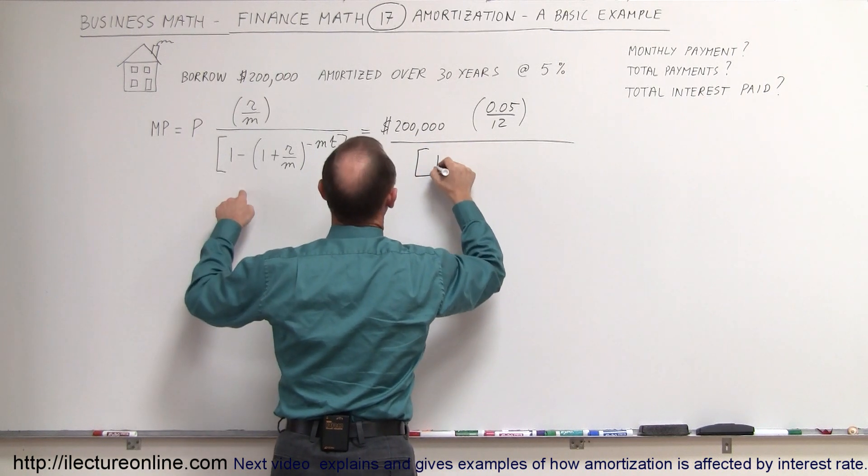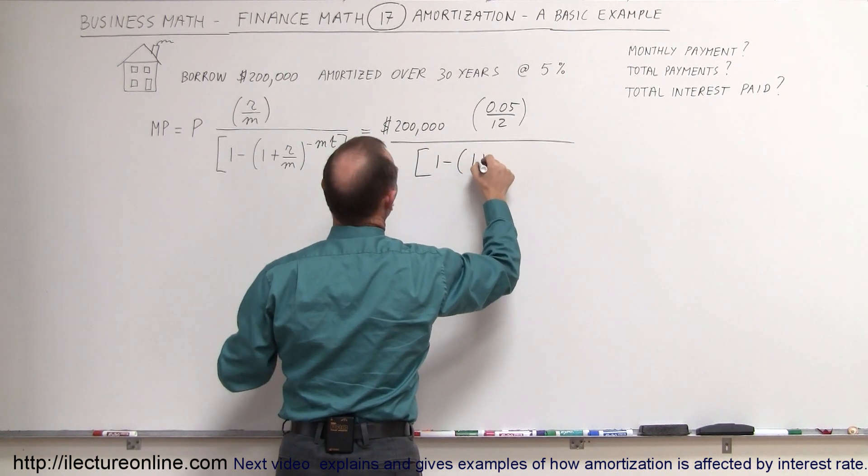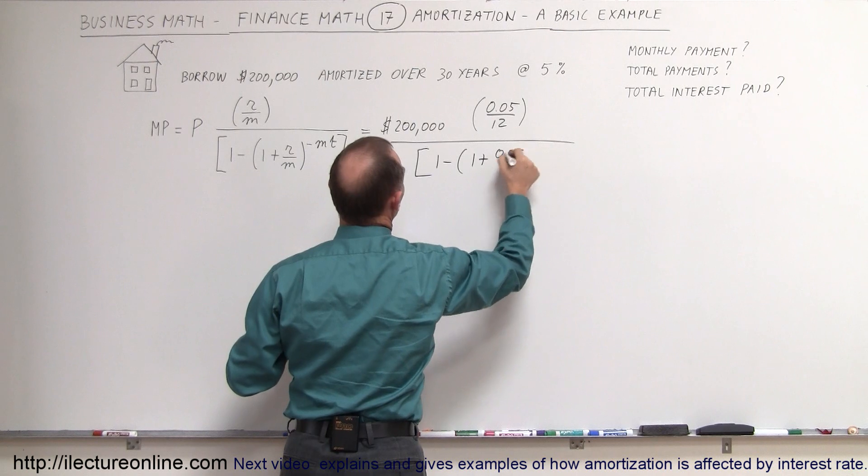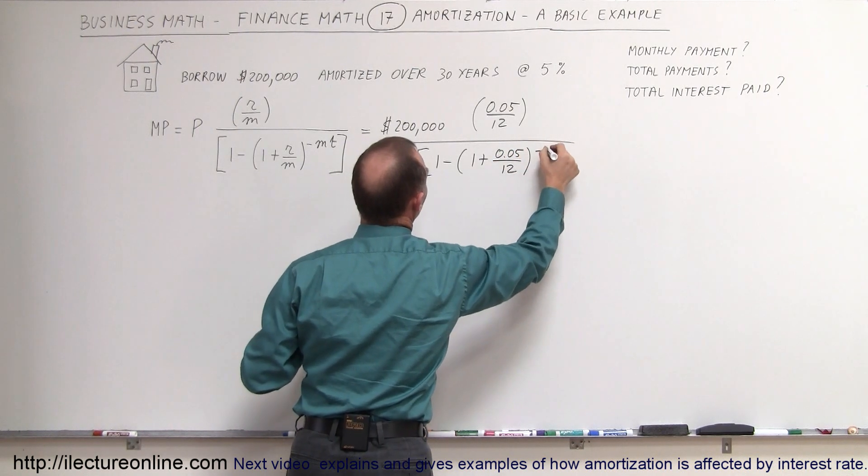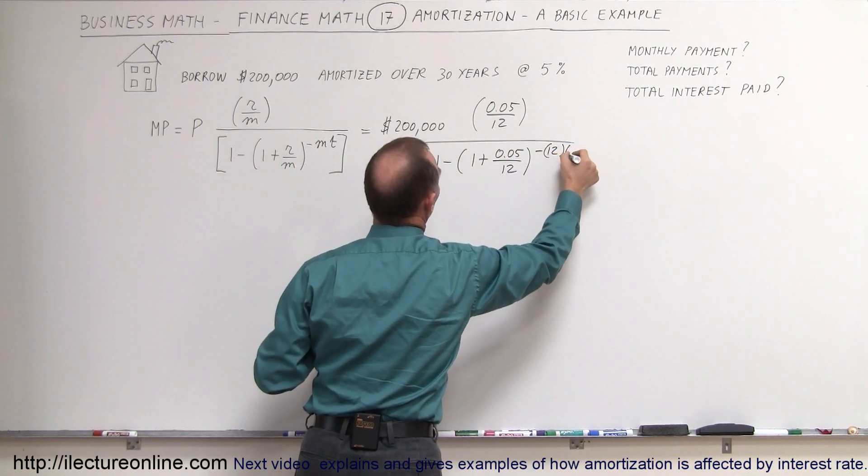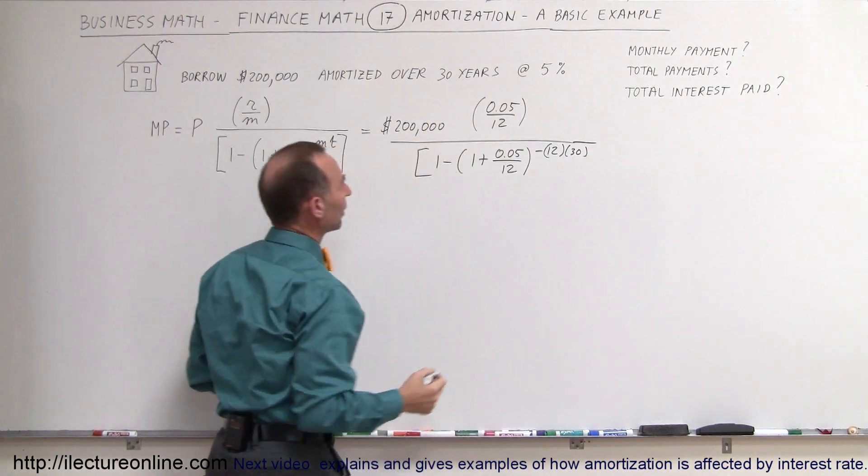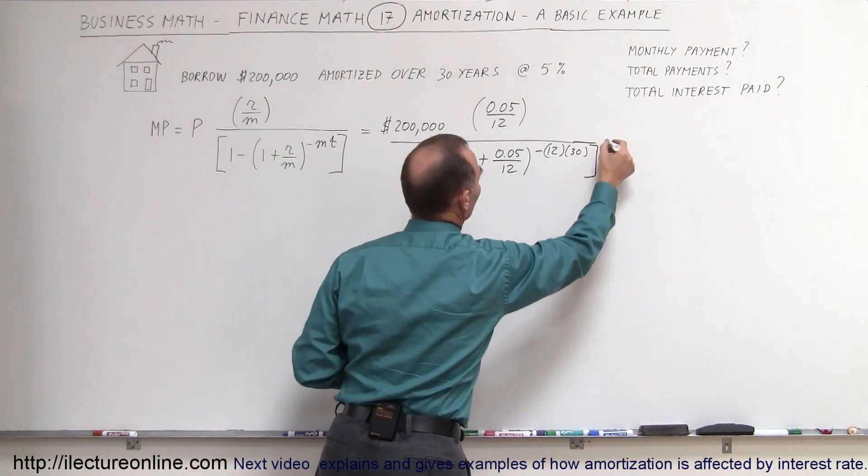The whole thing divided by 1 minus the quantity, 1 plus the rate, divided by 12, raised to the minus 12 times 30. And of course, 12 times 30 is 360. And let's close the bracket.